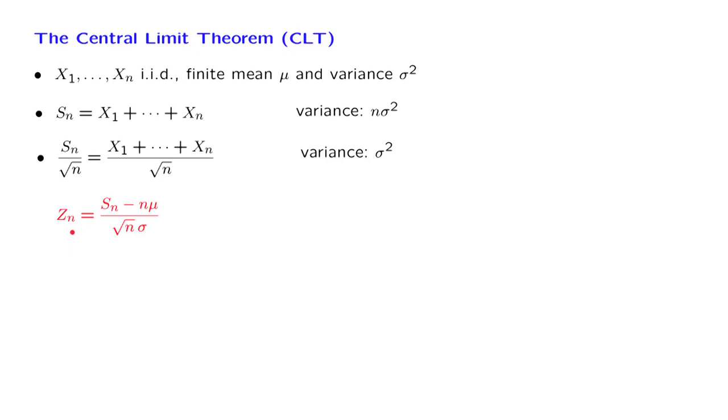This random variable that we obtain here has nice properties. The mean of this random variable is equal to 0, because we did subtract the mean of the x's. And the variance of this random variable is going to be equal to 1. The reason is that the variance is the variance of the numerator, which is n times sigma squared, divided by the square of the denominator, which is also n times sigma squared. So as n changes, the distribution of the random variable Zn stays in place. It has a mean of 0, and its width more or less stays the same, because we have a constant variance.